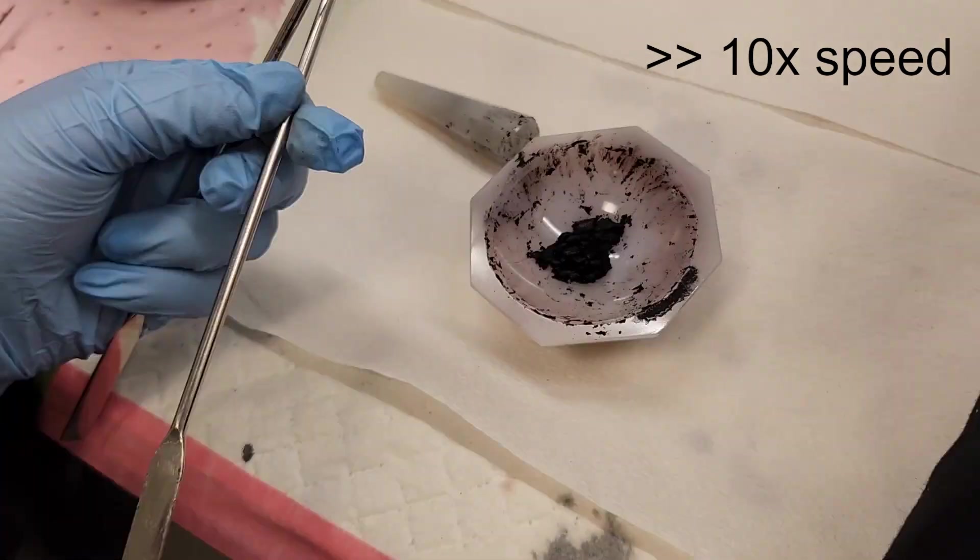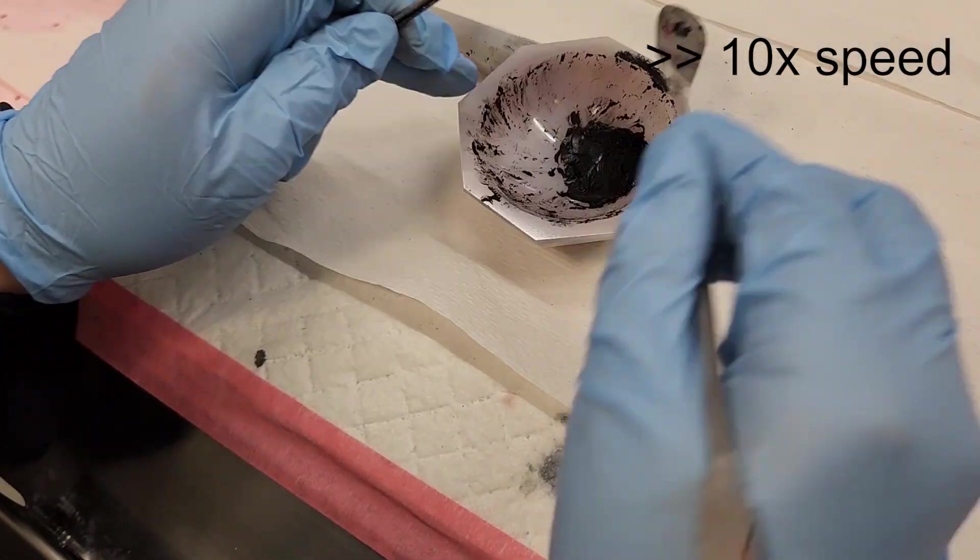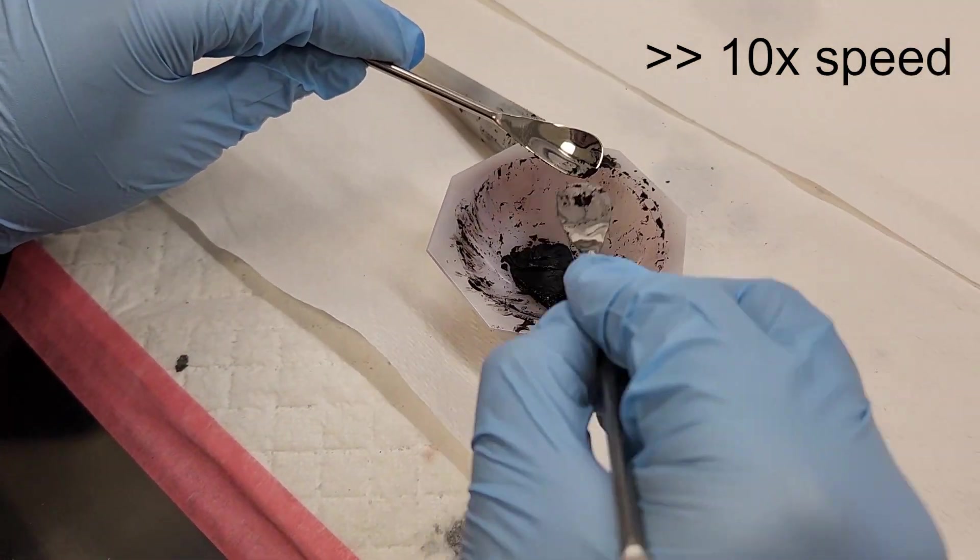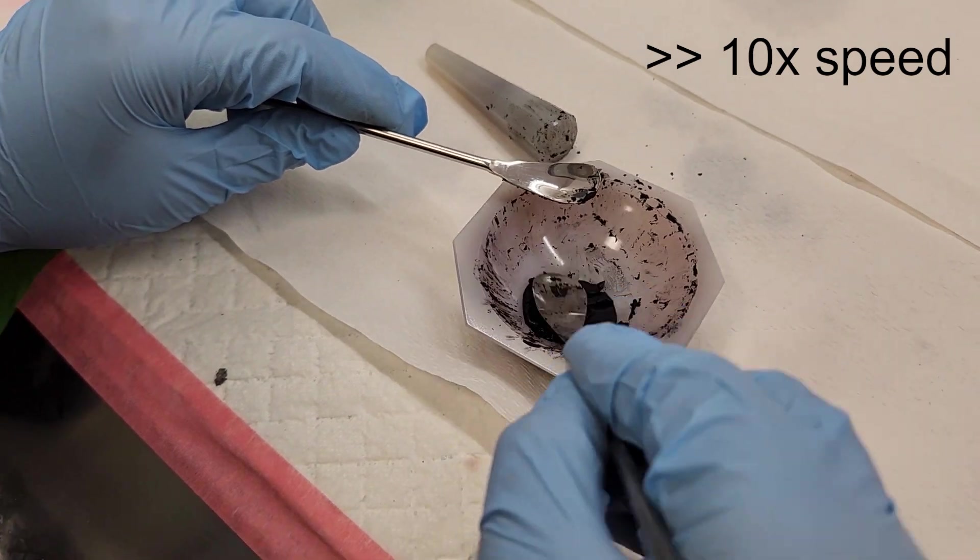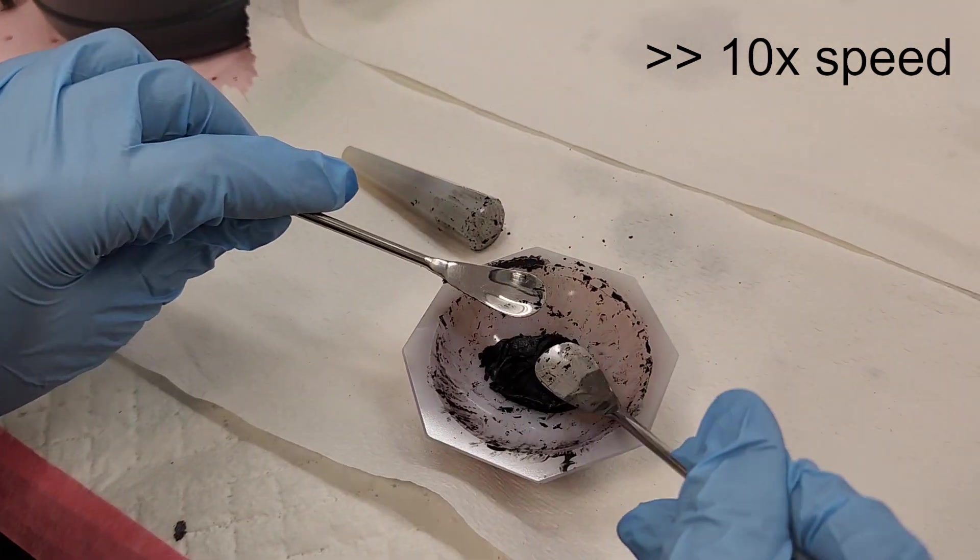It seems quite dry, so we add more ethanol and repeat the folding and pressing process. Now this looks like one piece of carbon.